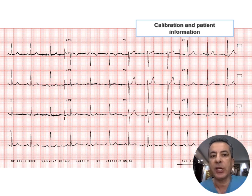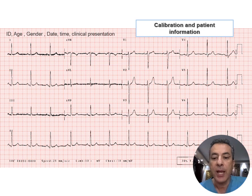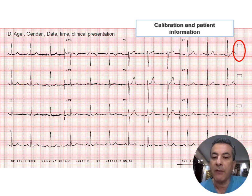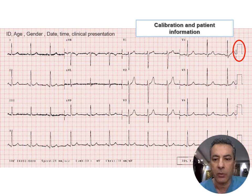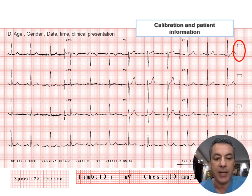Now moving on to the final section: practical application of the concepts covered. We begin with the initial steps of assessing calibration and patient information. First, check for the presence of patient information and any remarks or symptomatology marked on the ECG. Second, look at the calibration mark and confirm that 1 millivolt covers exactly 10 vertical squares. Then check the calibration of the recording speed, which is very important for applying standard time measurements.